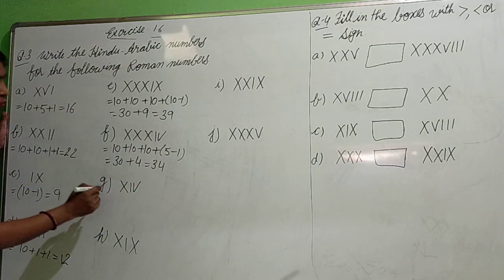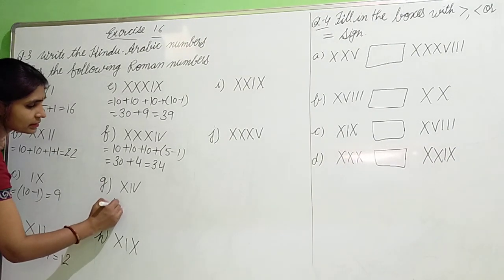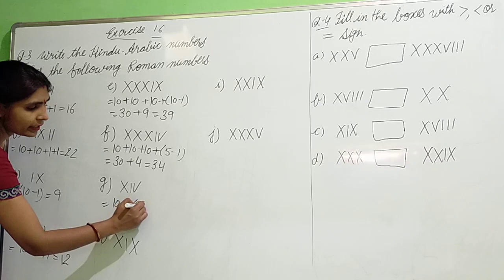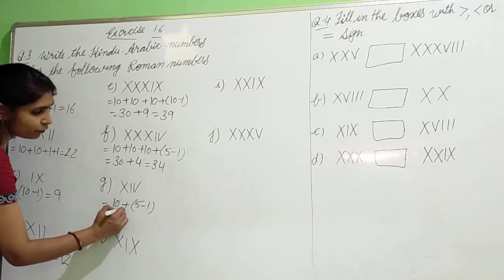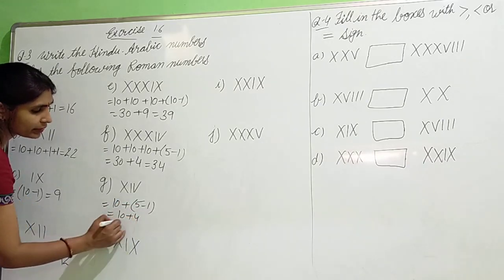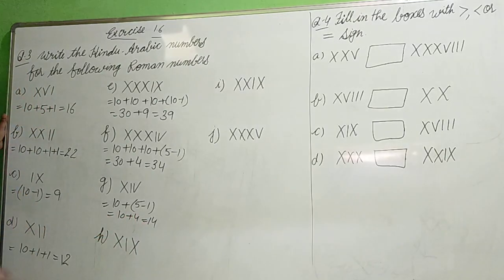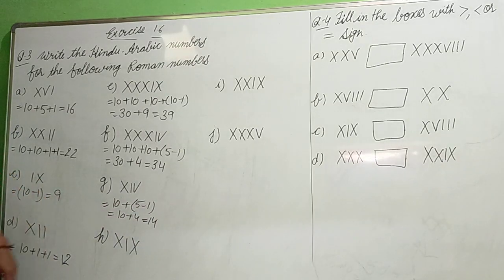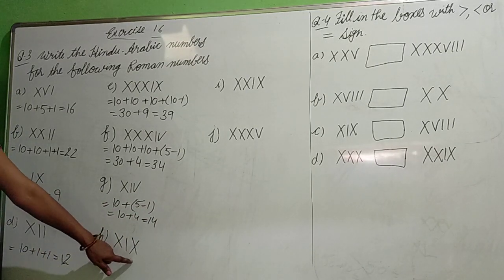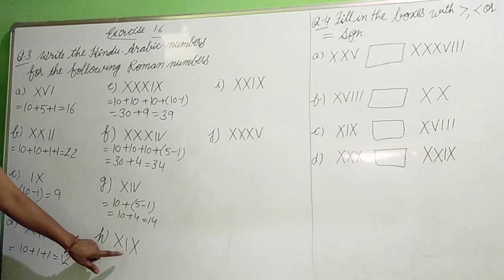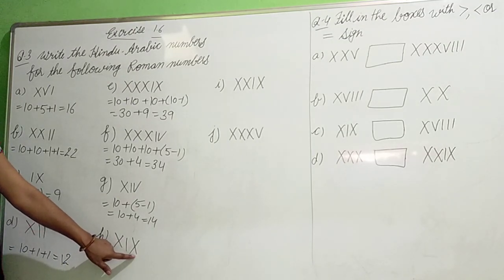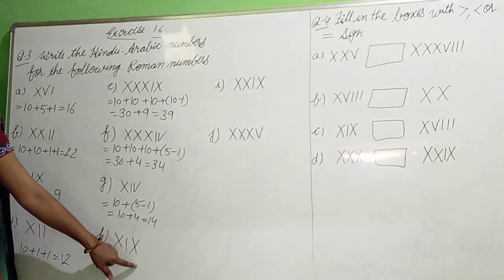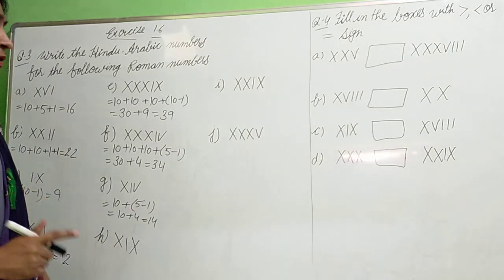See one more part also. X is 10 plus IV — V with subtraction of I — 5 minus 1 equals 4. So 10 plus 4 equals 14. Next, XIX means 10 plus 9 equals 19. You have to do this yourself.